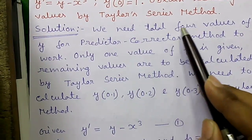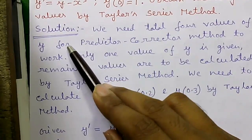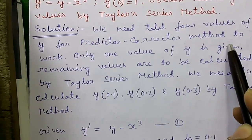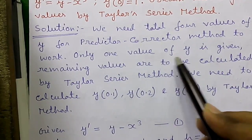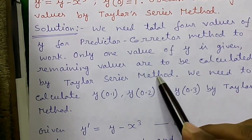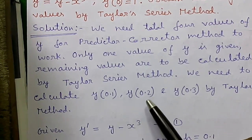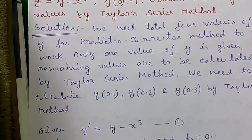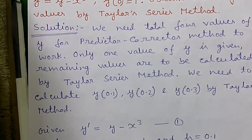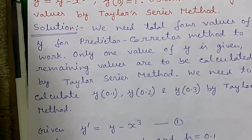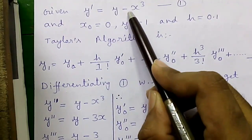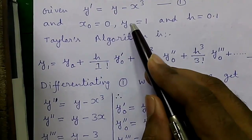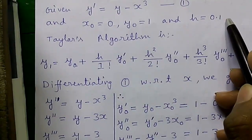We need a total of 4 values of y for the predictor-corrector method to work. Only one value of y is given, that is y₀, so the remaining values are to be calculated by Taylor series method. We need to calculate y(0.1), y(0.2), and y(0.3) by Taylor series method, and finally we will get y(0.4) by the predictor-corrector formula. Given: y' = y - x³, x₀ = 0, y₀ = 1, and h = 0.1.